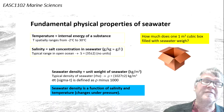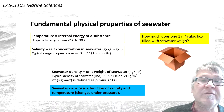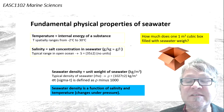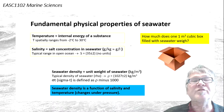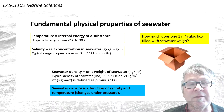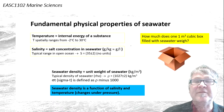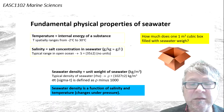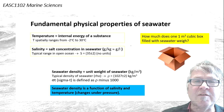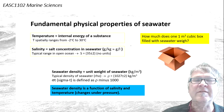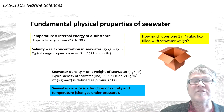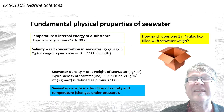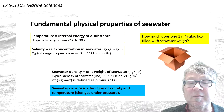Oceanographers often use a unit called sigma-t, which is defined as the true density minus 1000. So on maps you might see numbers like 27 with no units, which means a density of 1027 kilograms per cubic meter.